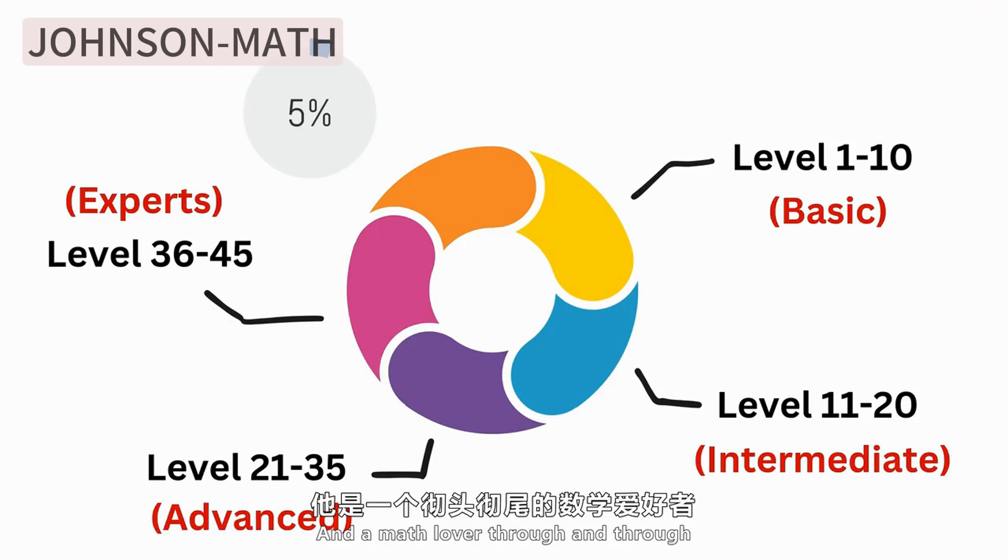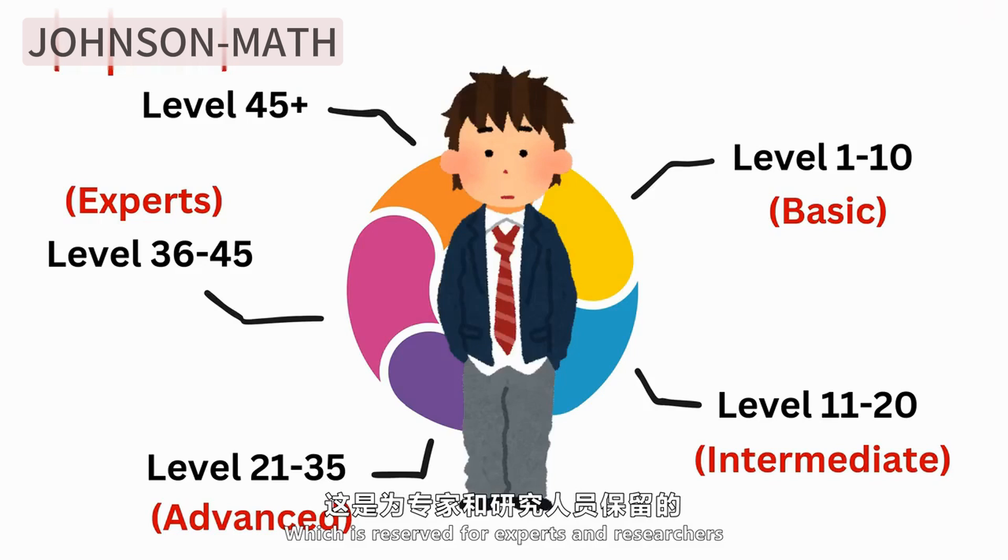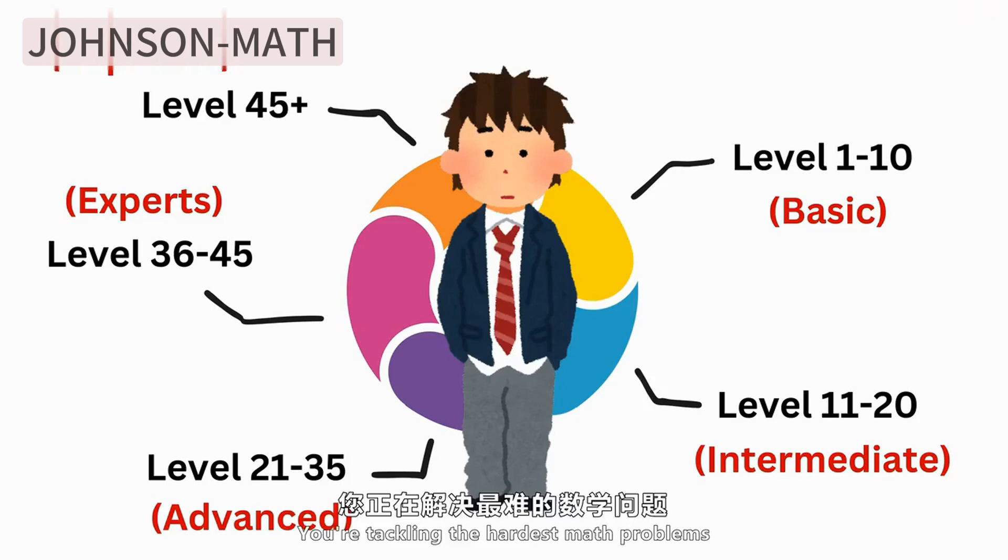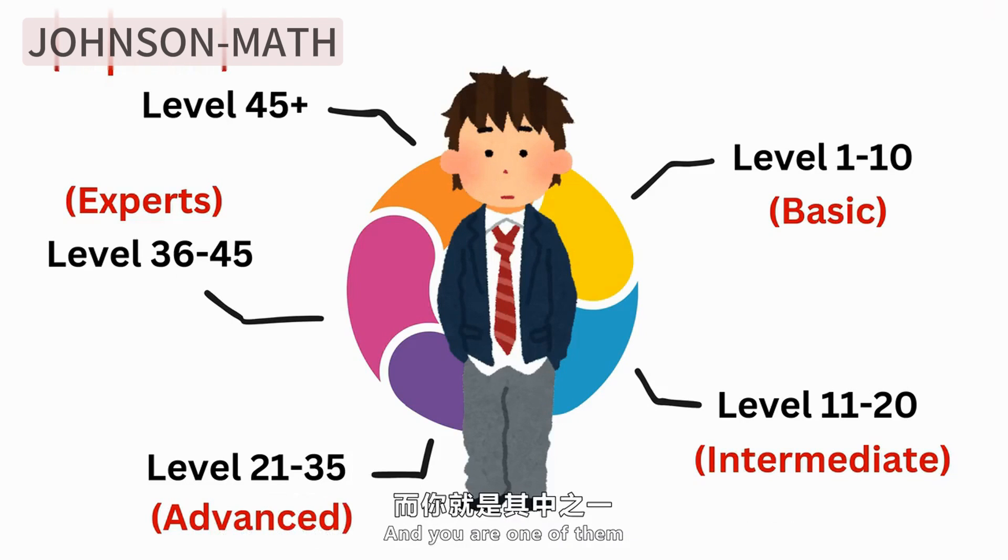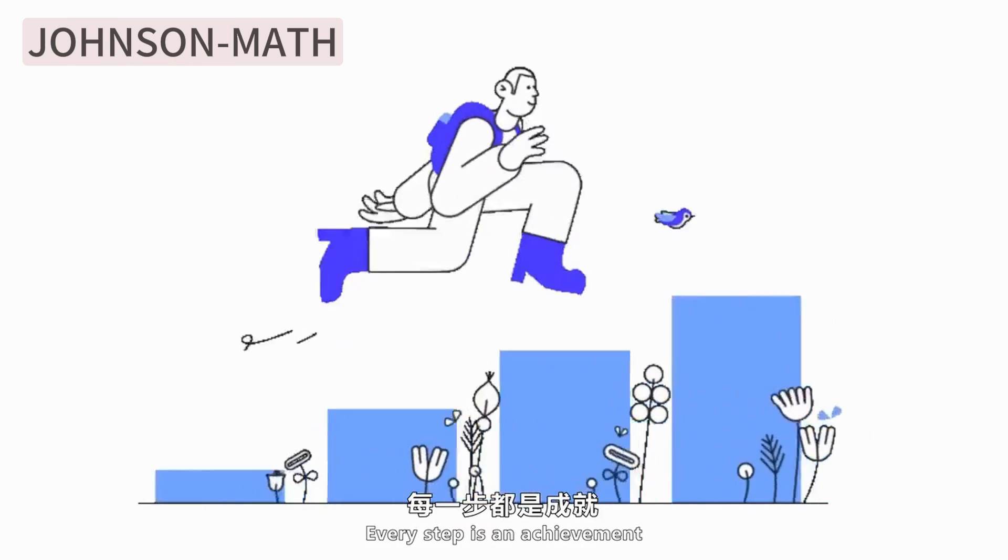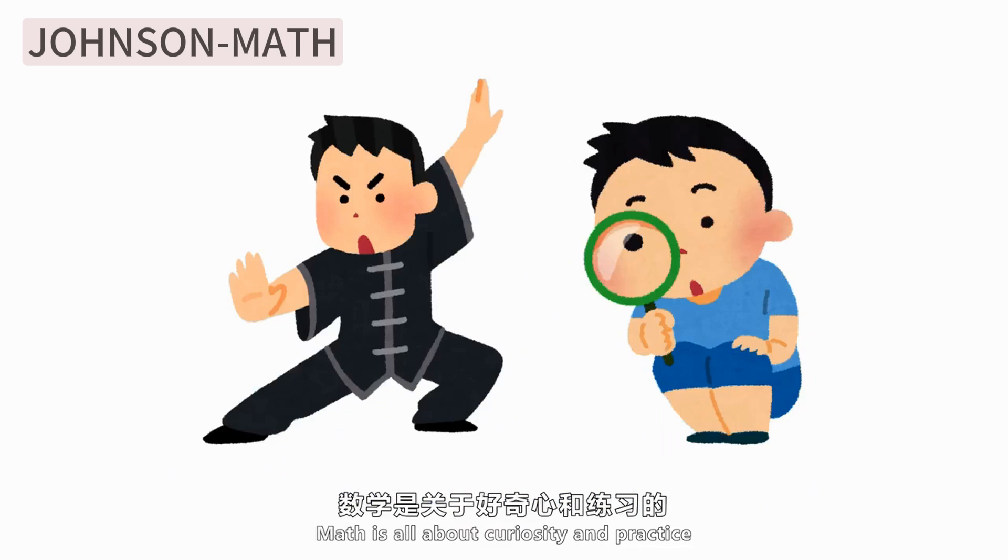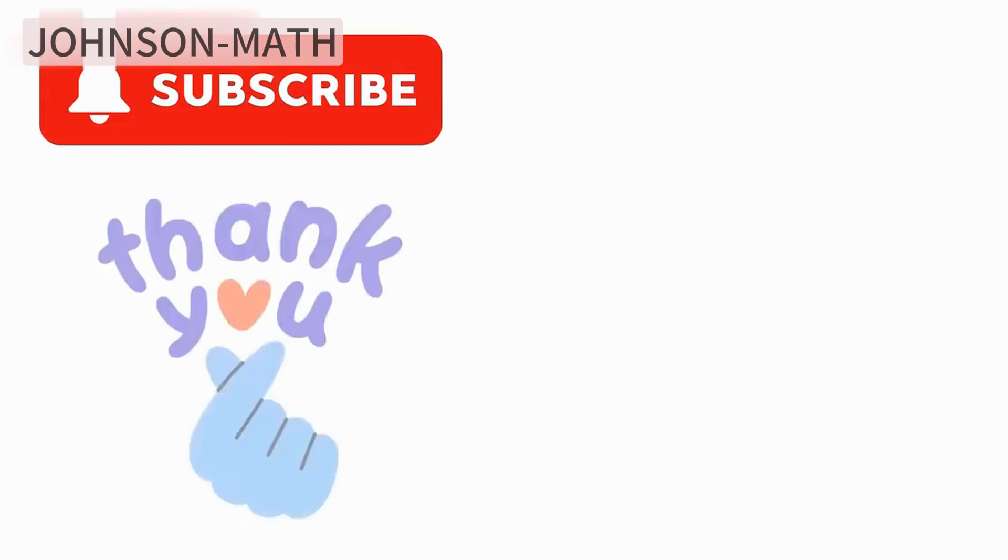If you are above level 45, then you are at the top level. This is reserved for experts and researchers. If you are here, you are dealing with the hardest math problems. Only the top 1 percent of mathematicians achieve these heights, and you are one of them. No matter how far you go, every step is an achievement. Mathematics is about curiosity and practice, so keep exploring. Enjoy the journey ahead.